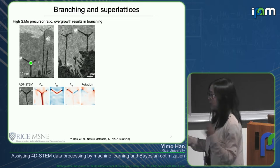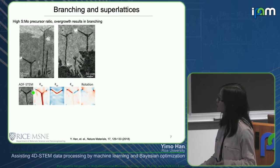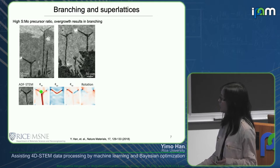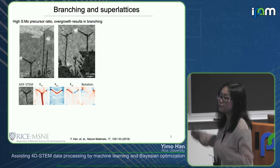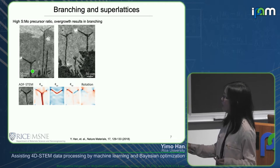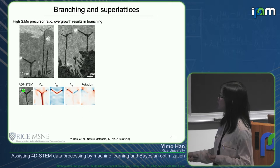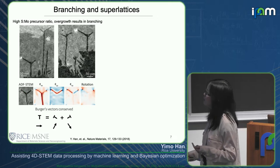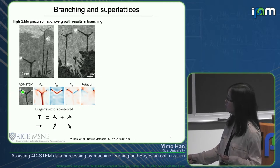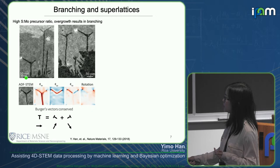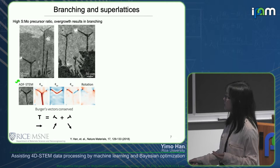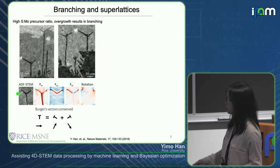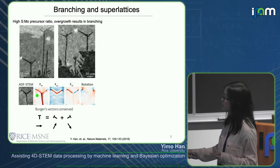We also observed branching effects in the HAADF-STEM image. Initially I thought this was additional dislocations, but geometric phase analysis showed no new dislocation — instead the original dislocation split into two partial dislocations that continued migrating, forming Y-shaped 1D channels. Because the two partial dislocations split from the original, the Burgers vectors are conserved, and this splitting does not introduce additional lattice distortion around the branching area.